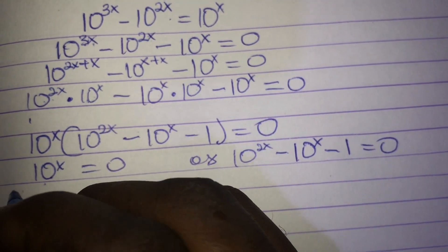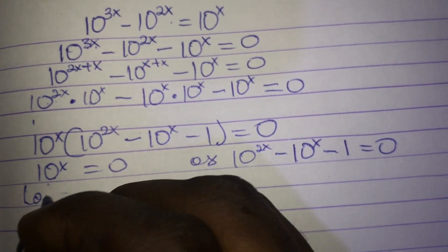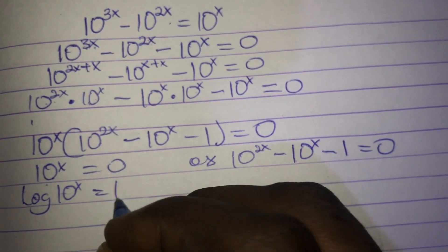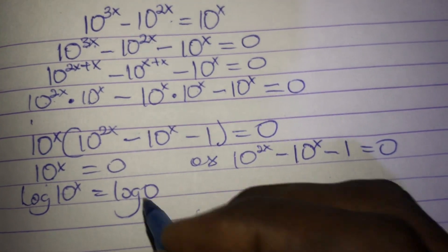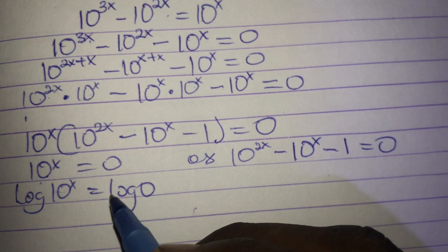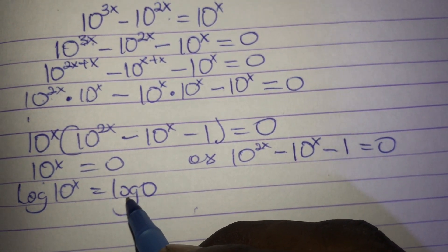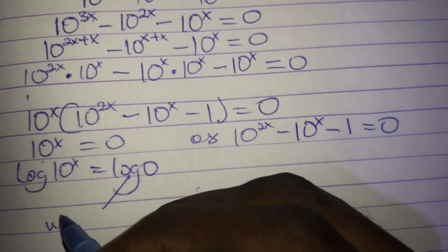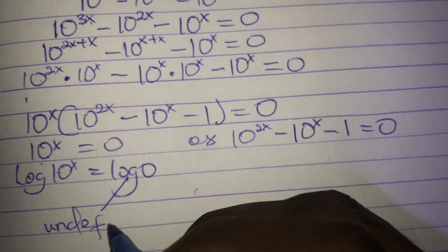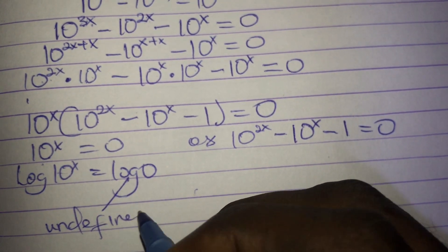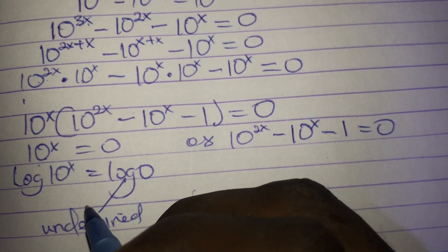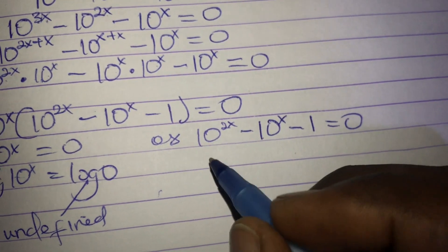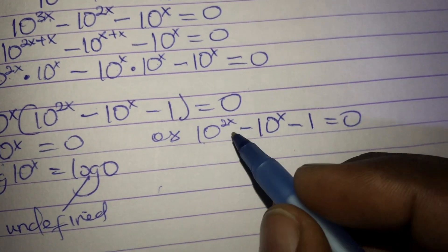For the first case, we can introduce logarithm: log of 10 exponent x equals log of zero. However, log zero is undefined, so this case gives no valid solution.